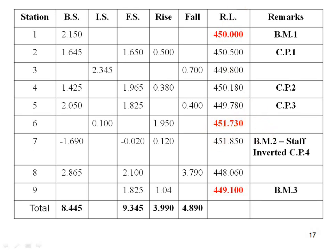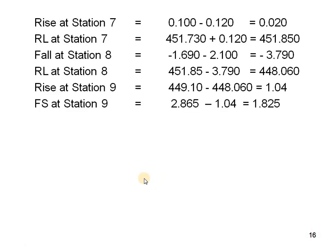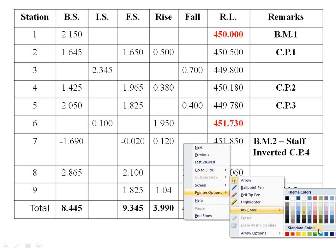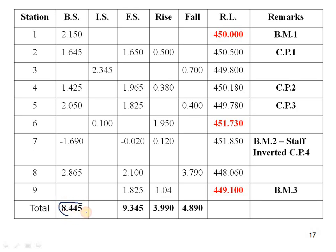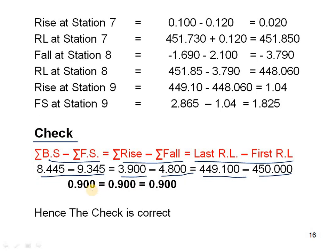Final check for Problem 2: Sigma BS minus sigma FS = sigma Rise minus sigma Fall = last RL minus first RL. Using values 8.445 minus 9.345, rise total 3.9 minus fall total 4.8, and 449.100 minus 450.000, all equal minus 0.900. Hence the check is satisfied and the problem is correct.